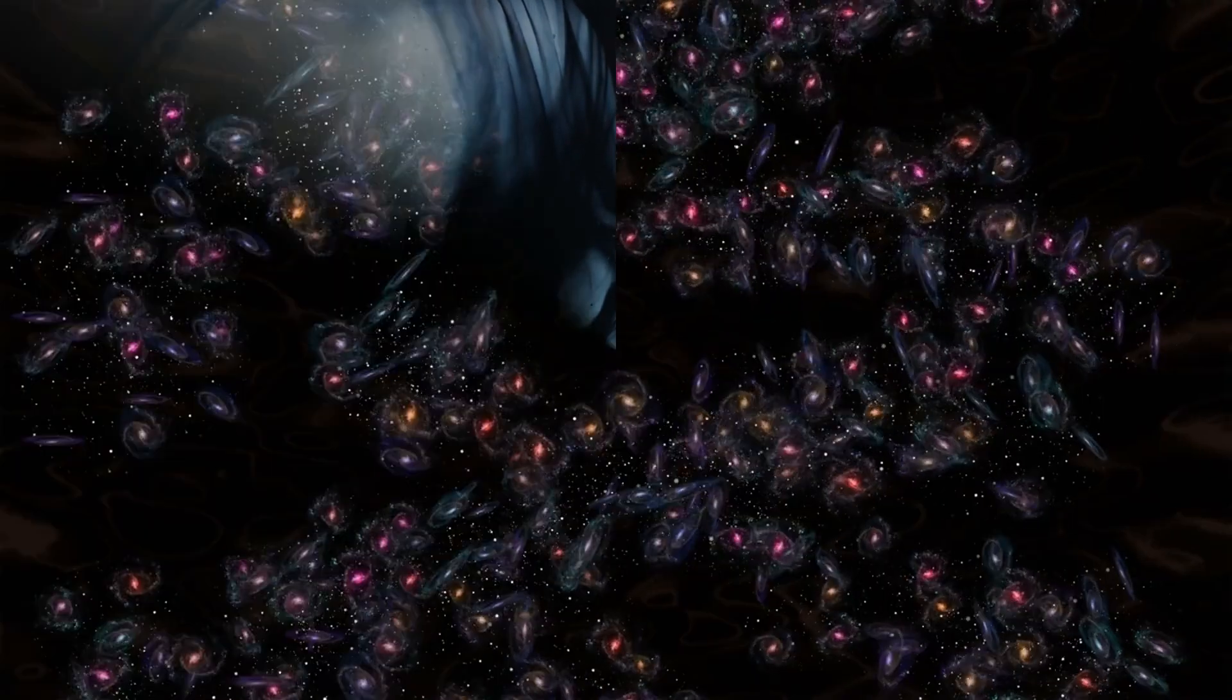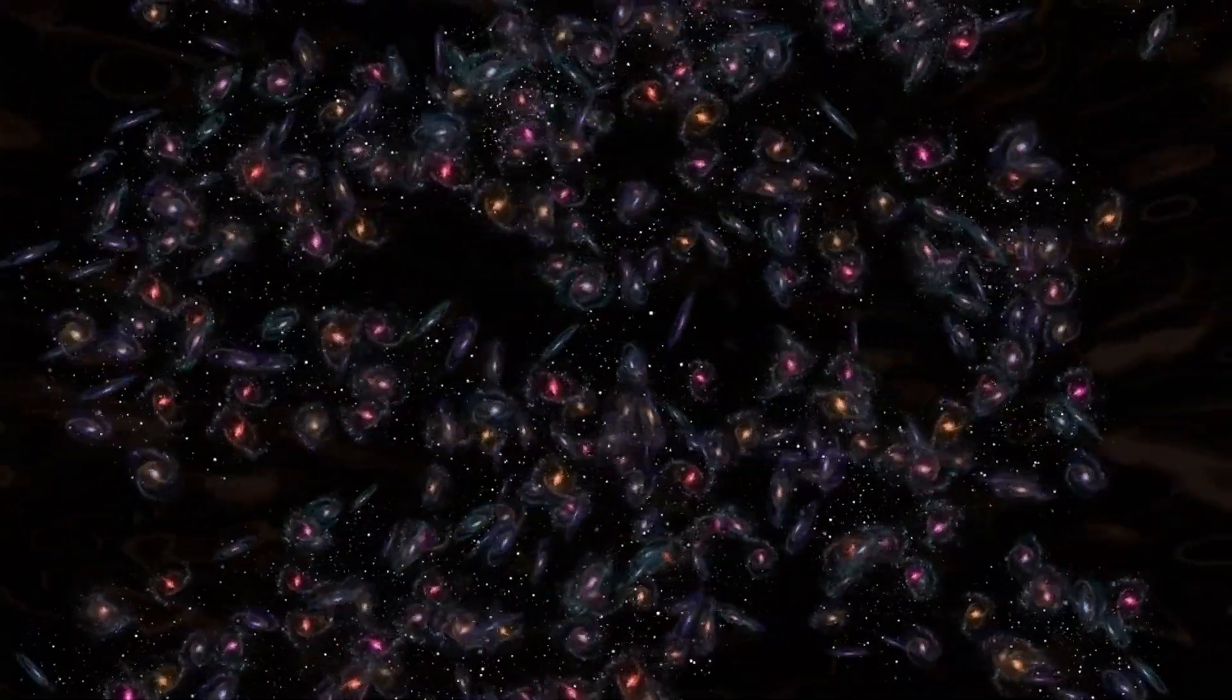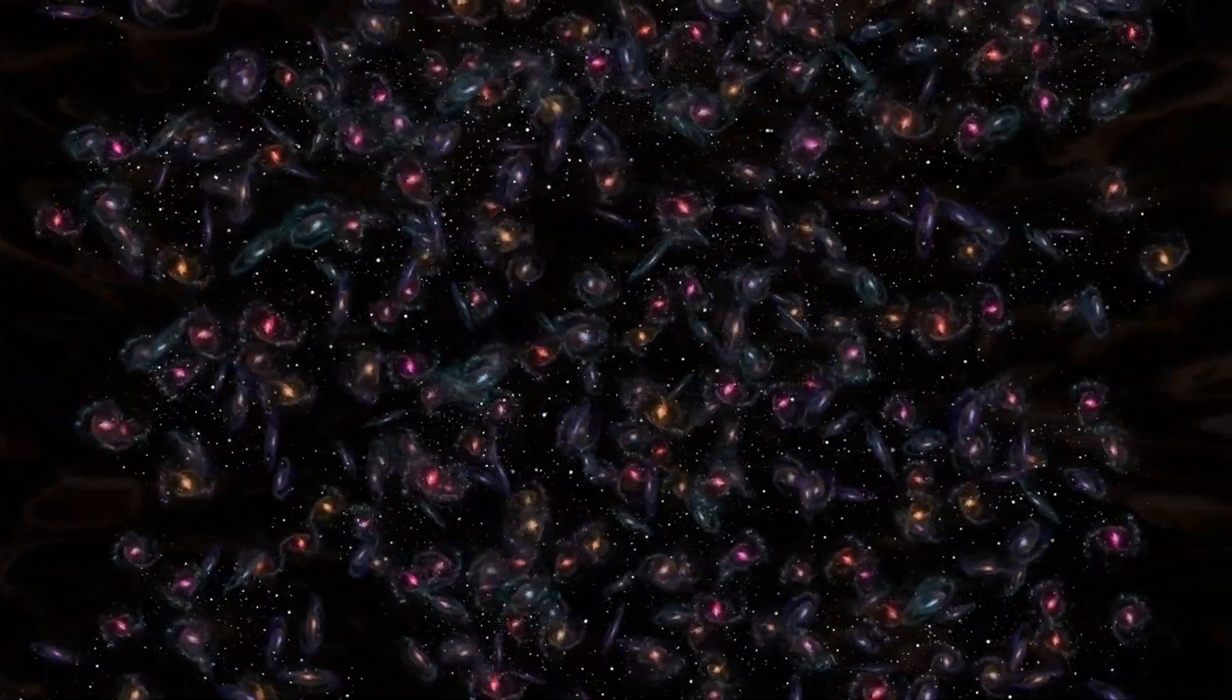For example, dark matter is thought to form a sort of gravitational scaffold around which galaxies coalesce. If the properties of dark matter or its distribution are different from what we have assumed, it could alter the timeline and mechanisms of galaxy formation. Similarly, the discovery of these mature galaxies challenges our understanding of dark energy and the universe's expansion.